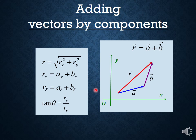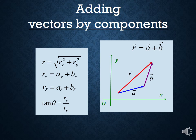If I wanted to find the angle theta that R makes with a line parallel to the positive x-axis, I can use the tangent relationship. Once I know R-sub-y and R-sub-x, I can take the inverse tangent to get theta. I can also find the length of R by doing the square root of R-sub-x squared plus R-sub-y squared. So when I add vectors by components, I just find the components and then add them.